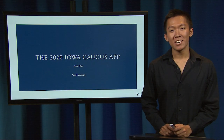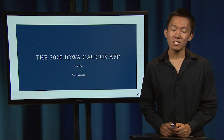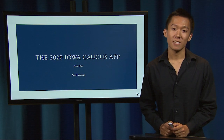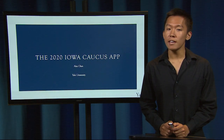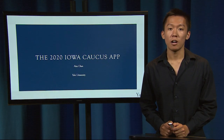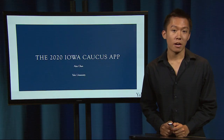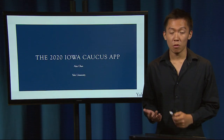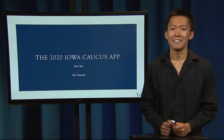Hi, my name is Alex Chen. I am a junior in Yale College, double majoring in Computer Science and Ethics, Politics, and Economics. Today we'll be discussing the app developed to help report votes for the 2020 Iowa Democratic Caucus, named the Iowa Reporter App, and how it was a complete failure.